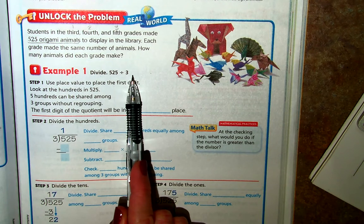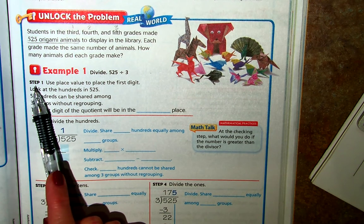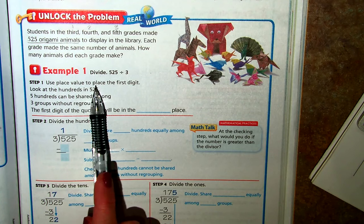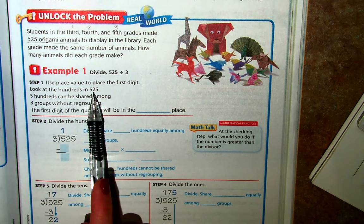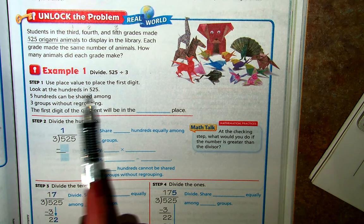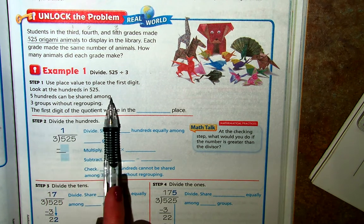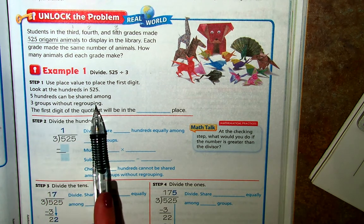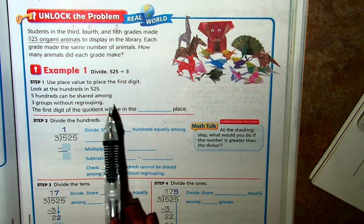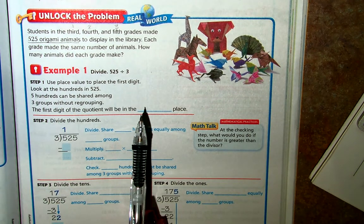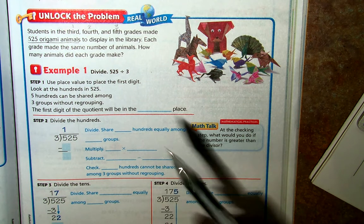So our first step, step one, is use place value to place the first digit, and so we look at the hundreds in 525. Five hundreds can be shared among three groups without regrouping. So the first digit of the quotient will be in the hundreds place.